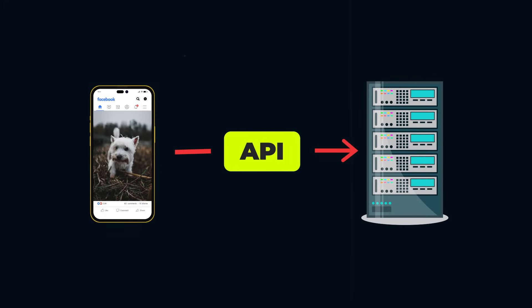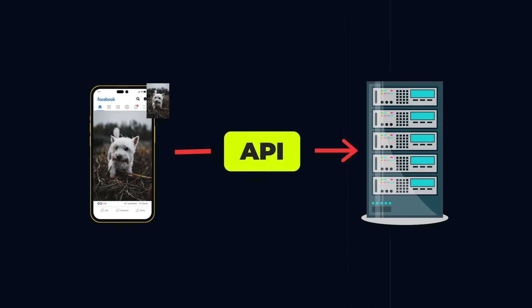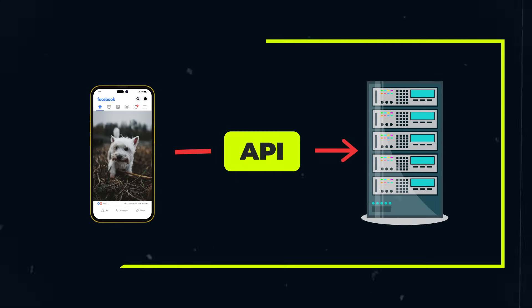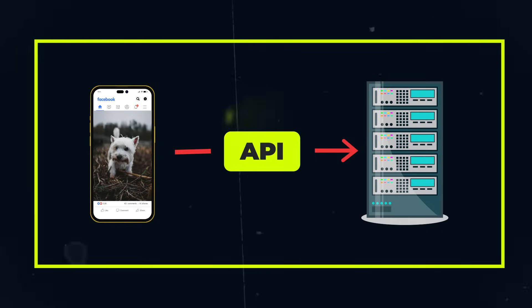Once the picture has been processed, the Facebook server sends a response back to the Facebook app. The Facebook app displays the picture on your screen and sends it to your friends. This entire process is made possible by the Facebook API.